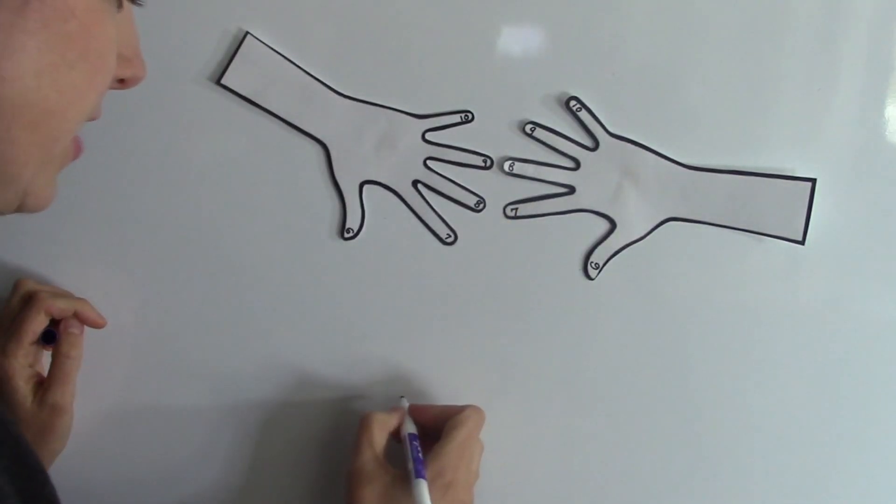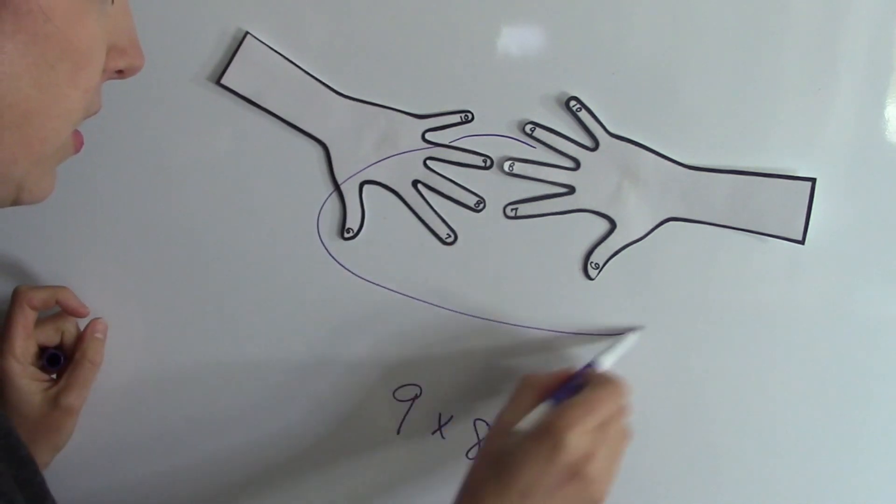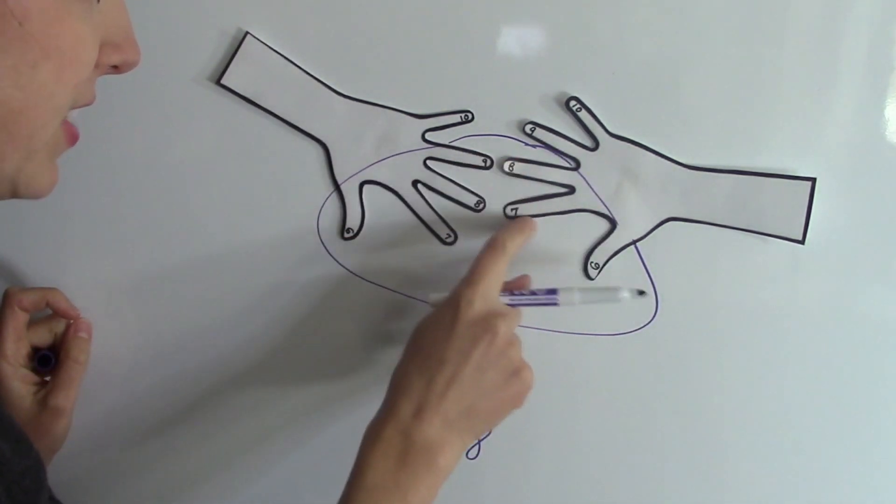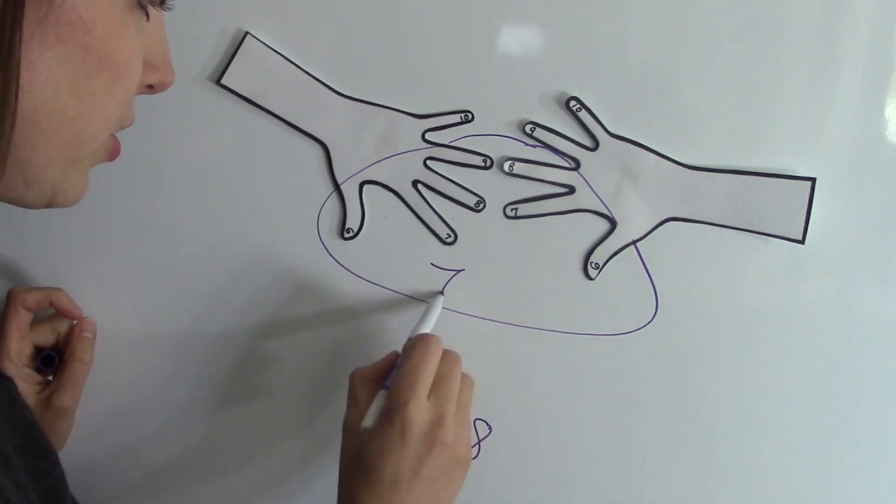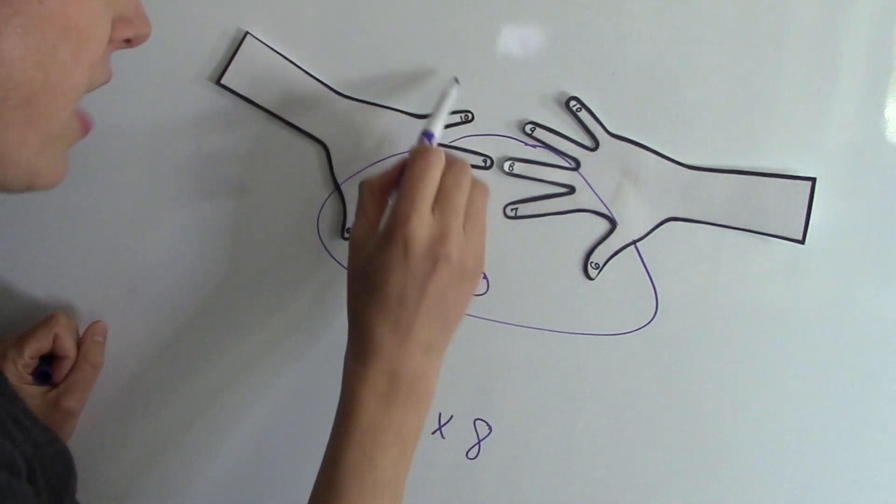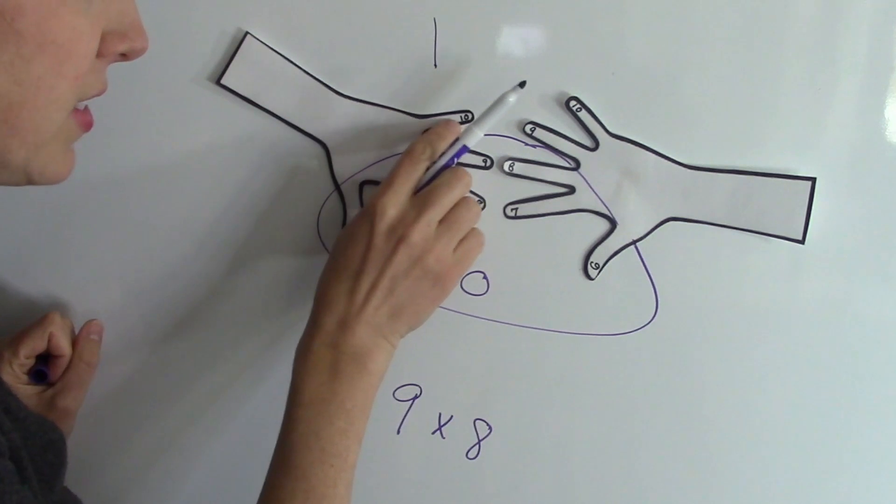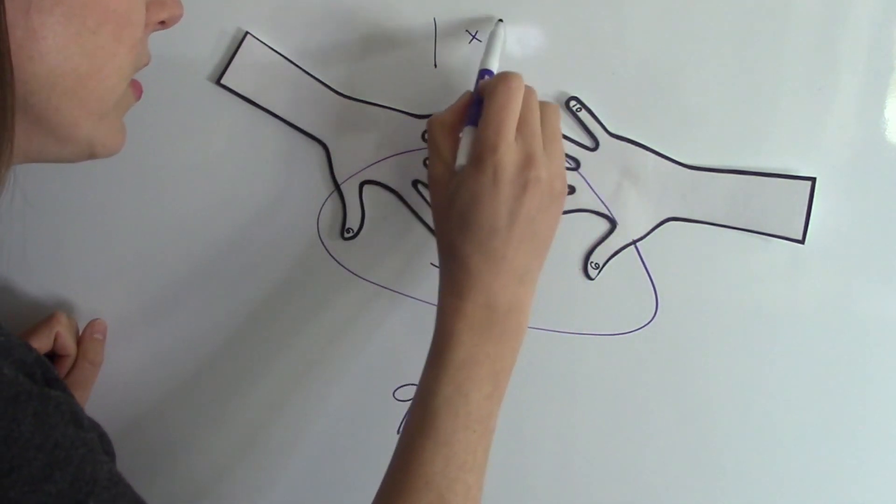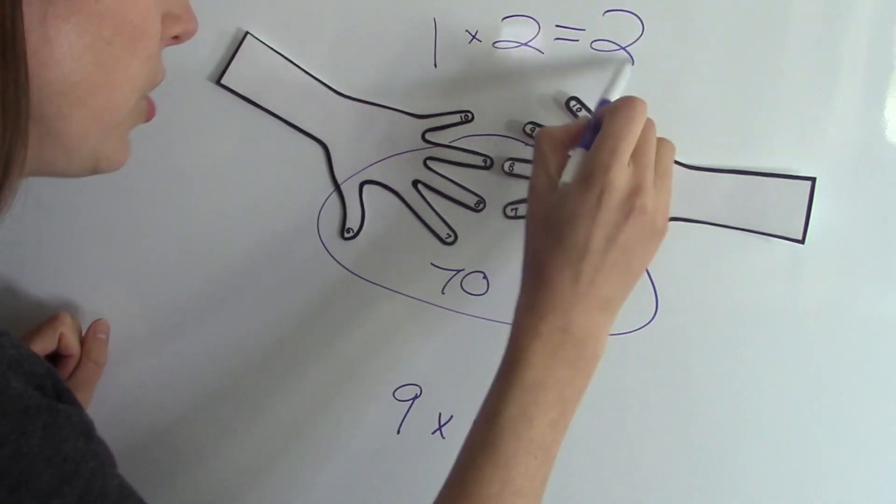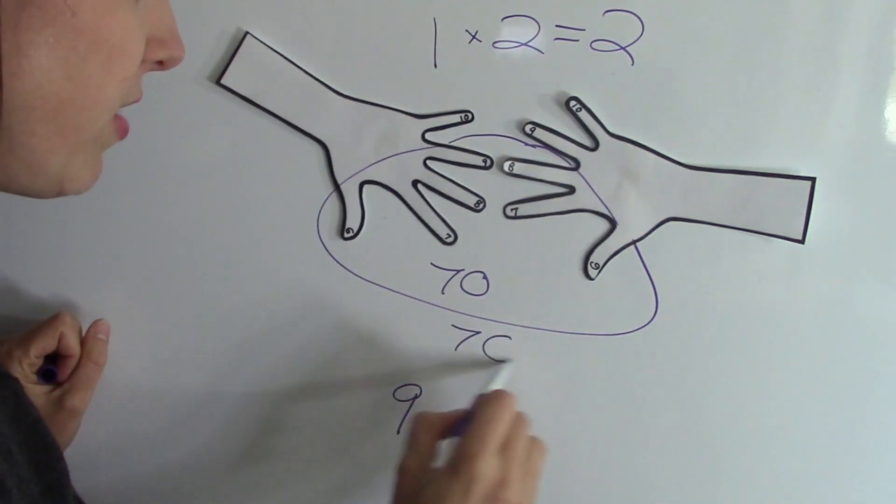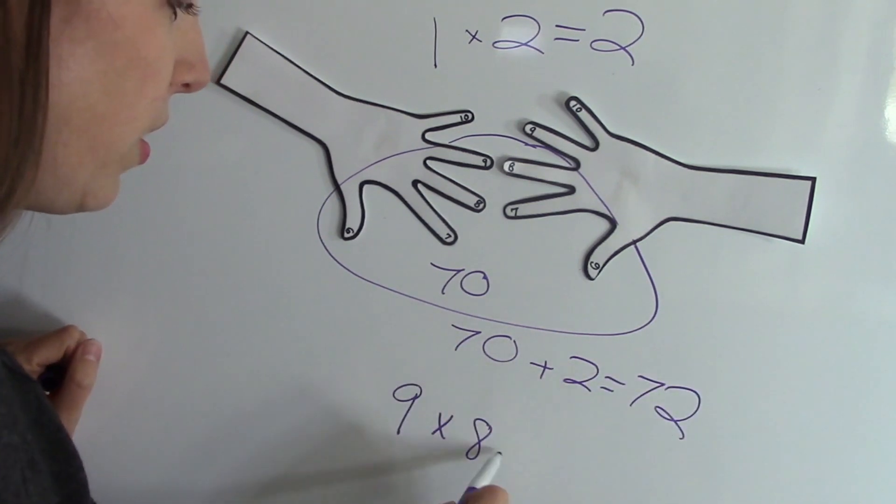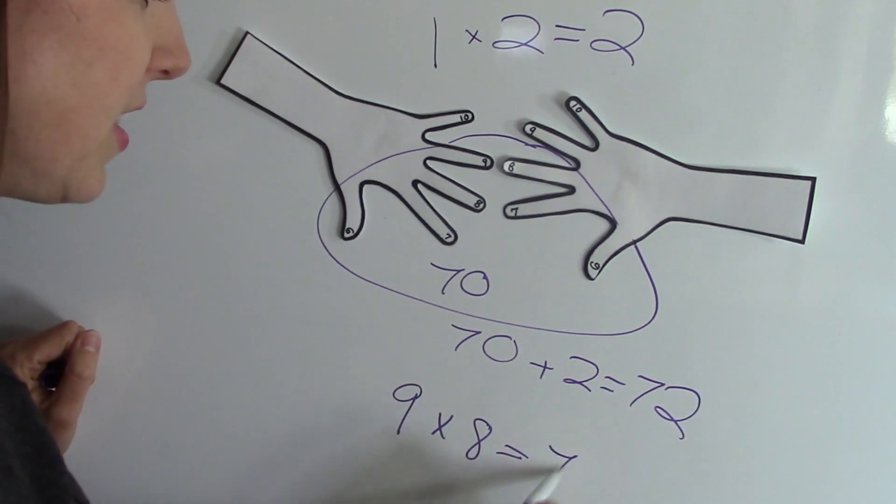Now we've got 9 times 8. So I will circle these fingers and I have 1, 2, 3, 4, 5, 6, 7, which turns it to 70. And then I have 1 over here, that's that 10 above and 2 over here. So 1 times 2 equals 2. So then I have 70 plus 2 equals 72. 9 times 8 is 72.